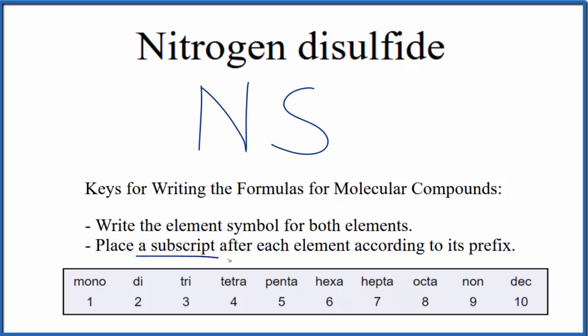Next, we'll place a subscript after each element according to its prefix. So for nitrogen, there's nothing out here. We don't write mono for the first element. So that just means that there's one here, although we don't write the one in the formula. For the sulfide, for sulfur, this di here means that there are two sulfur atoms. So we'll put a two here.